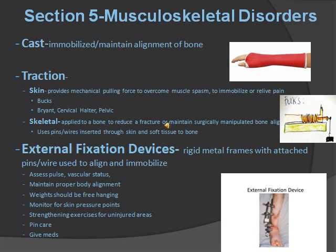Now, cast traction and external fixation devices. These are meant to maintain alignment of the bone and immobilize it. Cast we all know. Traction is a pulling force to keep it in place — there are two types: skin traction (think Buck's traction) and skeletal traction, which uses pins and wires inserted through the skin. External fixation devices use pins and wires outside of the body, as seen in the picture. For these, assess pulse and vascular status, maintain proper body alignment. Important: the weight should be free hanging. Monitor skin pressure points, do strengthening exercises for uninjured areas, and perform pin care — but do not adjust the pin, that's the doctor's job. Give medication for pain.